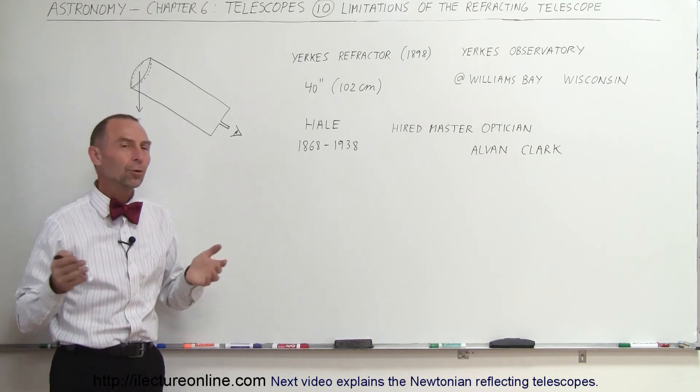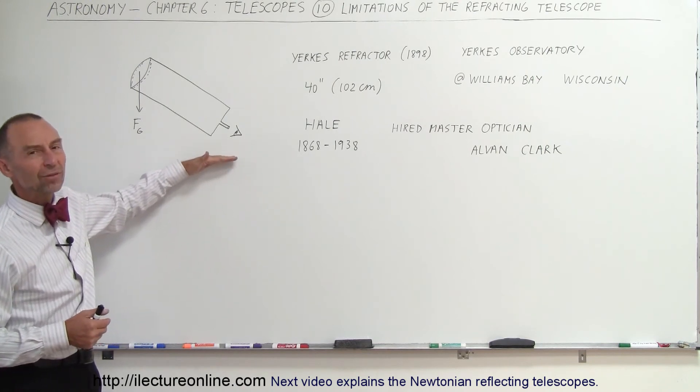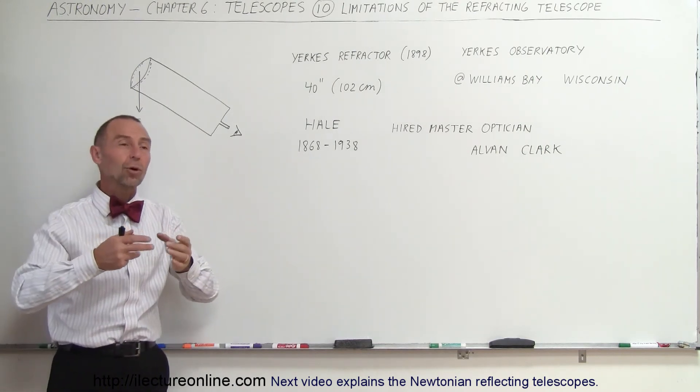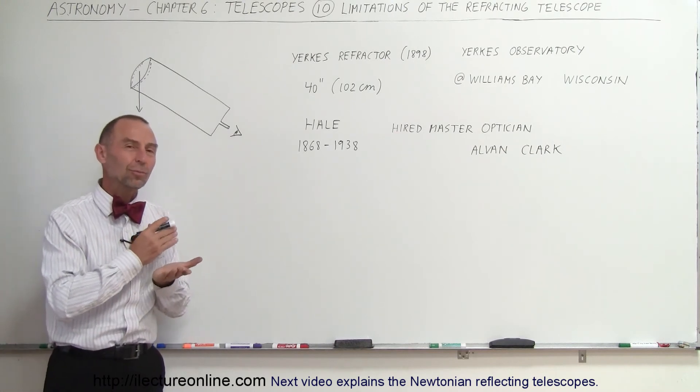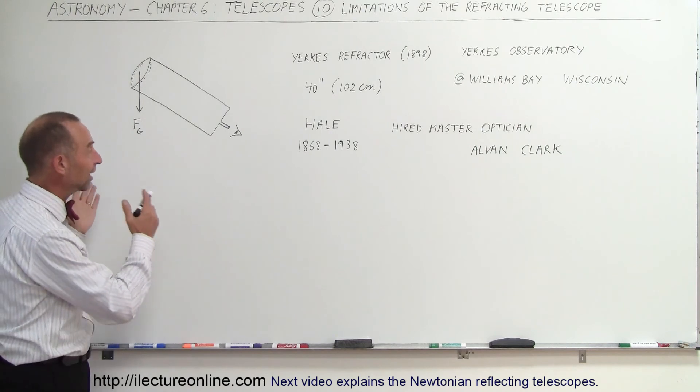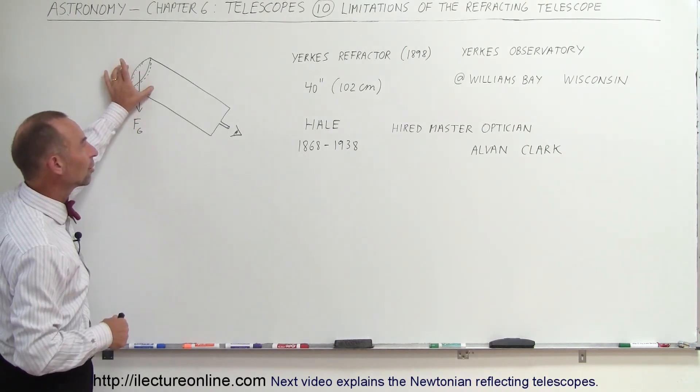But that was the last big hooray for refracting telescopes. After that, we didn't build any big ones like that anymore. Refracting telescopes are still practical for smaller telescopes, although it is so much easier to build objective mirrors rather than objective lenses that it's kind of passé. We don't use this concept of telescopes much anymore.